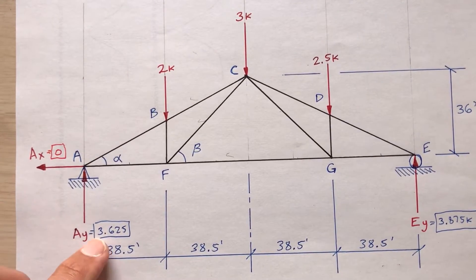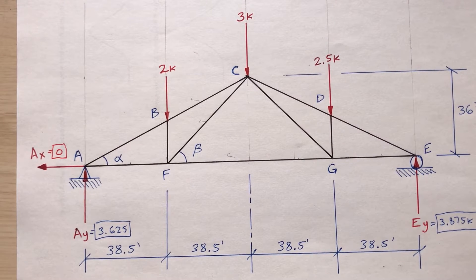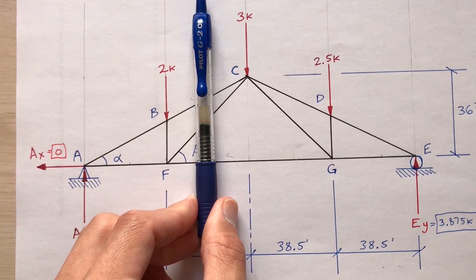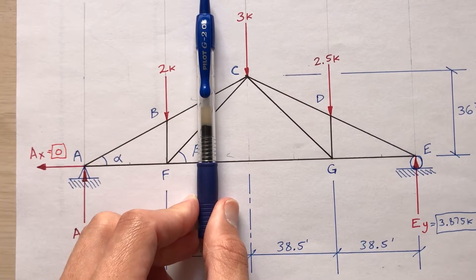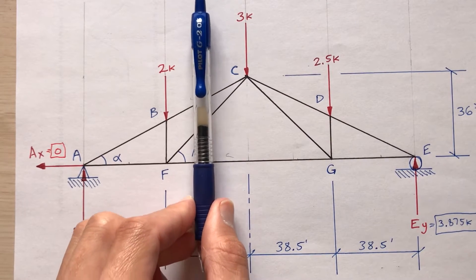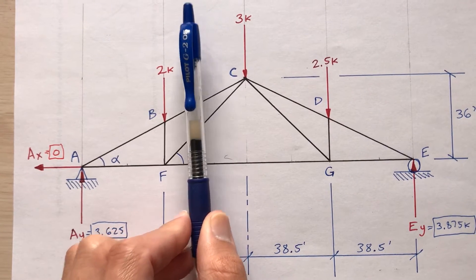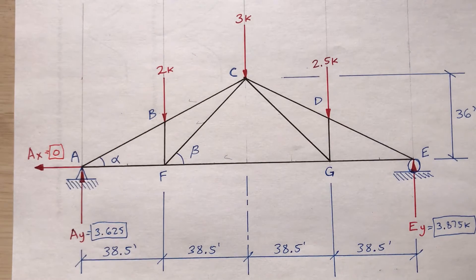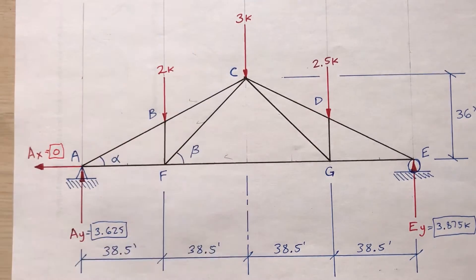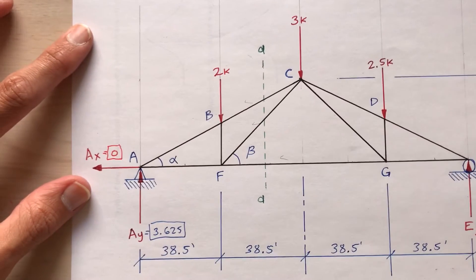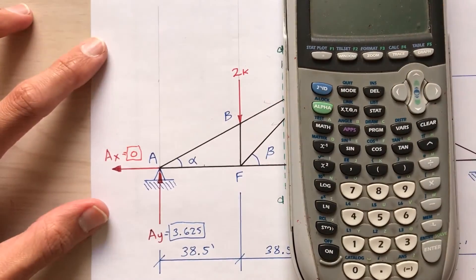To verify, you could take moments about point E. Now I'm going to find these bar forces using the method of sections. This requires cutting a section through the bars I'm interested in. So if I cut a section through BC, FC, and FG, I can find those bar forces without starting at joint A as in the method of joints. I'm going to cut section AA right through here — just showing the left portion of the truss.